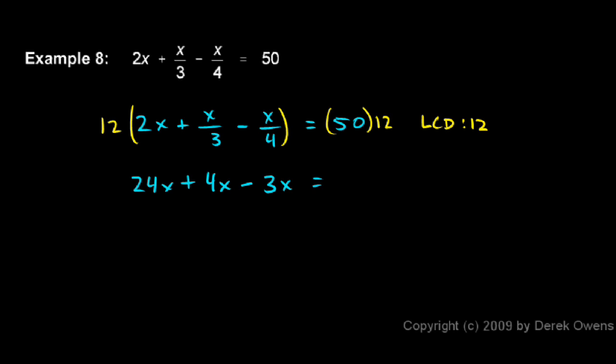And then on the right, I have 50 times 12, and I can do that in my head because I know that 5 times 12 is 60, and then I just have this extra 0 right there. So 600 is the right-hand side.